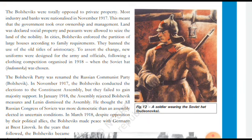Land was declared as social property. Elections came in November 1970 for the constituent assembly, but the Bolsheviks failed to get a majority. In January 1918, the assembly rejected Bolshevik measures and Lenin dismissed the assembly despite opposition.